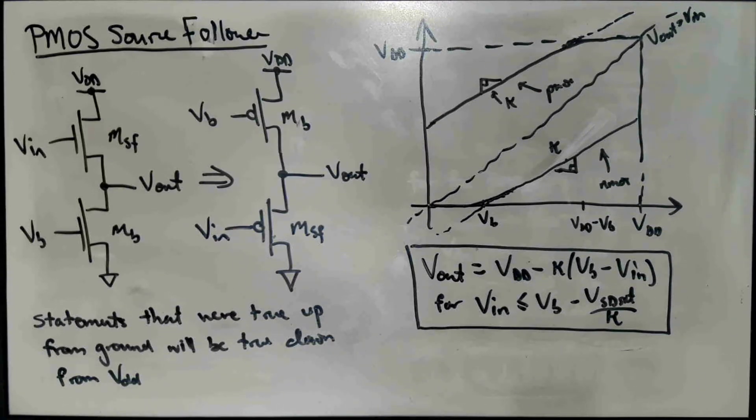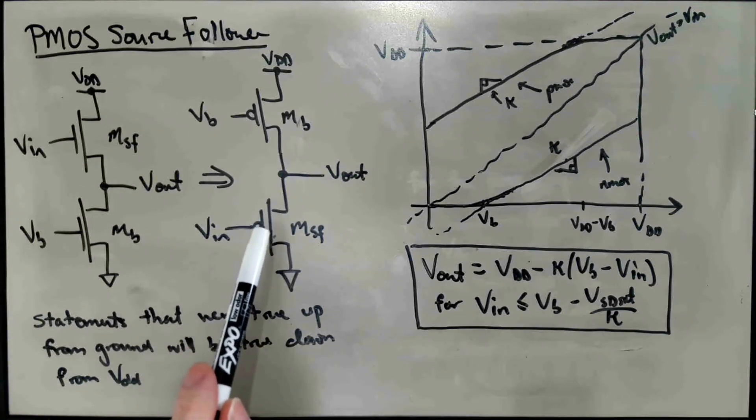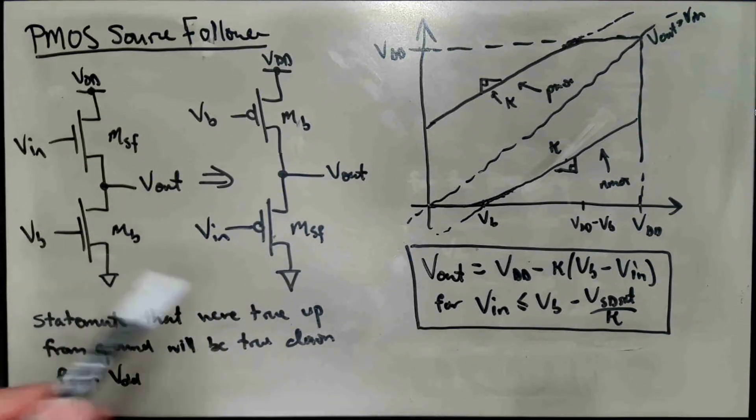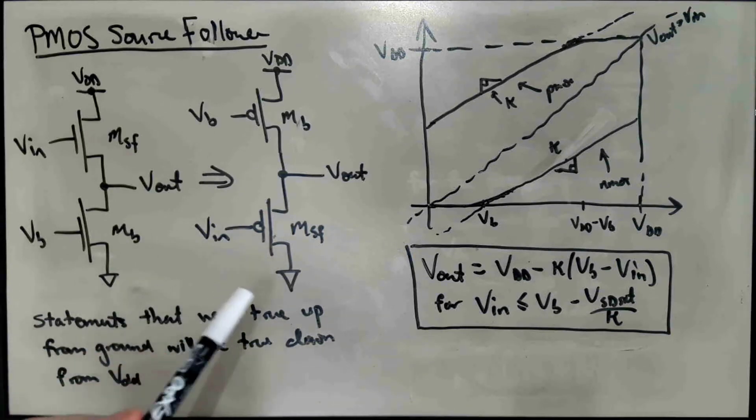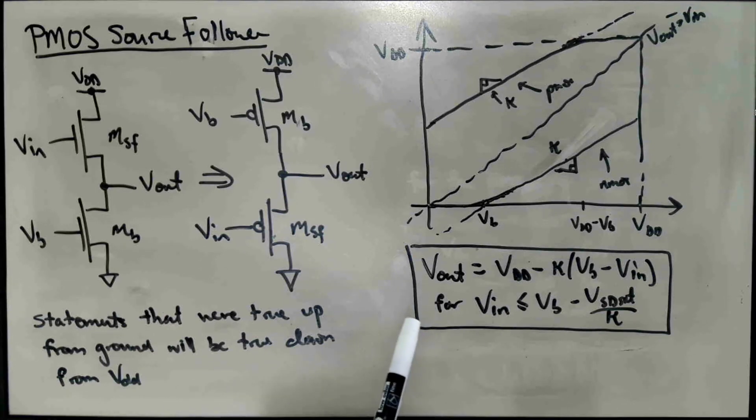So you can do this for any circuit, any CMOS circuit. If you have an NMOS prototype and you know something about the NMOS prototype and you'd like to map it into a corresponding statement about a PMOS version of the circuit, you flip the circuit upside down to get the PMOS version. And you basically map the voltages into VDD minus the voltage. And you may have to do some simplification, and that's really all there is to it.